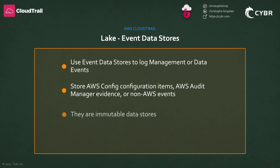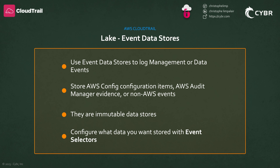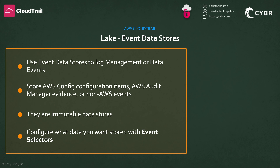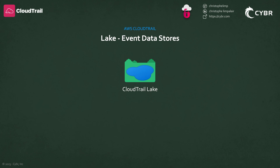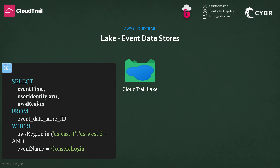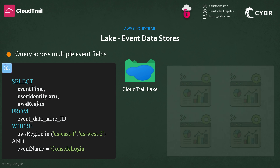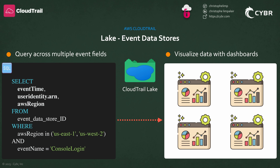These event data stores are immutable collections of event data, and you can choose exactly what data you want to store by configuring what's called event selectors. An added benefit of using Lake is that it provides integrations which you can use to log and store activity data from outside of Amazon Web Services — it could be a source from your on-prem VMs and containers, or even SaaS applications. Once the data is in Lake, you can query the event data using advanced SQL queries across multiple event fields, which is a lot more powerful than you can do with event history. You can even visualize CloudTrail data by creating Lake dashboards where each dashboard can be made up of multiple widgets that represent a SQL query.